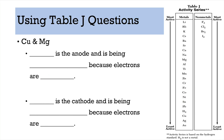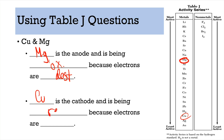Next pair: copper and magnesium. Magnesium is higher up on Table J — it is the anode, it is oxidized, and electrons are lost. That means copper is the cathode — it is being reduced and electrons are being gained.